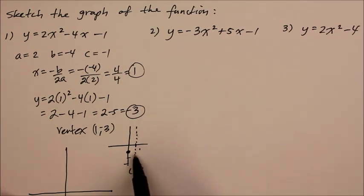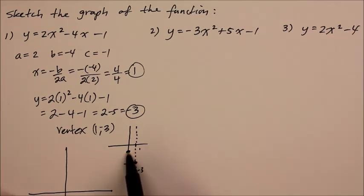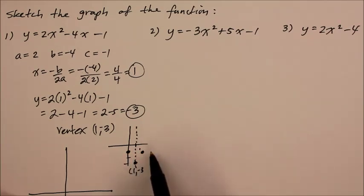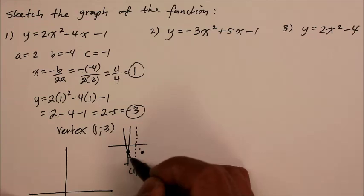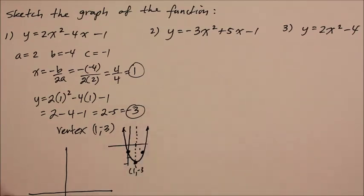And we know symmetrically if the y value is negative 1 on the left side of the axis of symmetry, it should be the same on the right side. And so when we draw the parabola, it should look like so. And that gives us a better estimate of what the graph should look like.